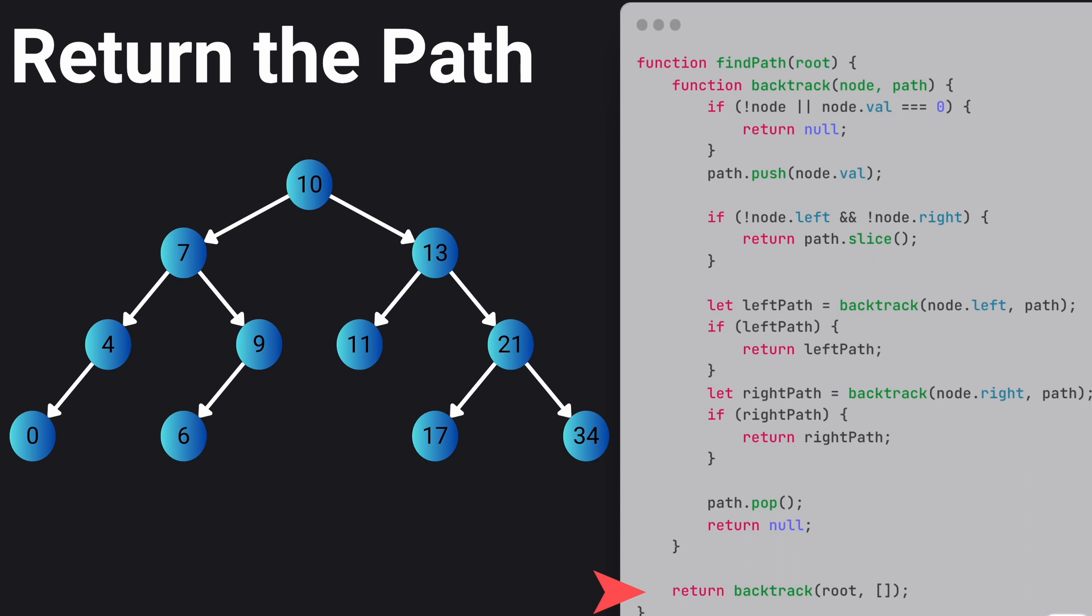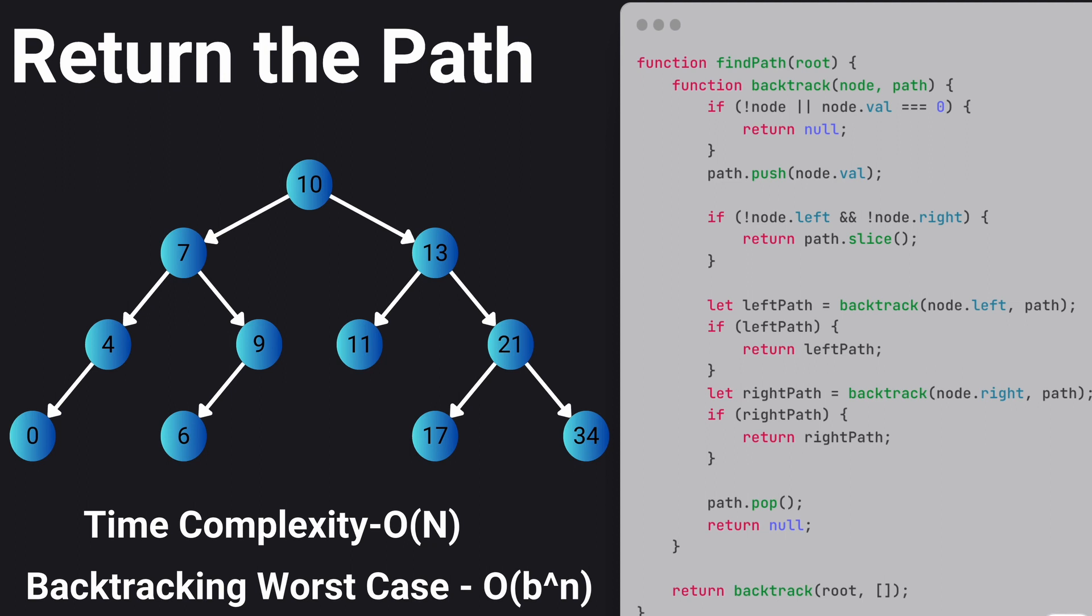Then we return the result of the backtrack function, which will be either null or the path to the node. The time complexity of this is also O(N), and in general the worst case of backtracking algorithms is O(B^N), where B is the branching factor, meaning the average number of children at each node, and N is the depth of the decision tree. This is because in the worst case you might need to explore each possible path in the solution space.